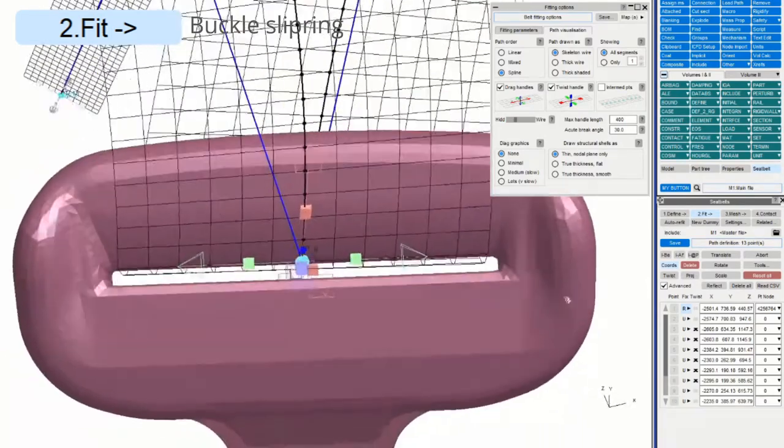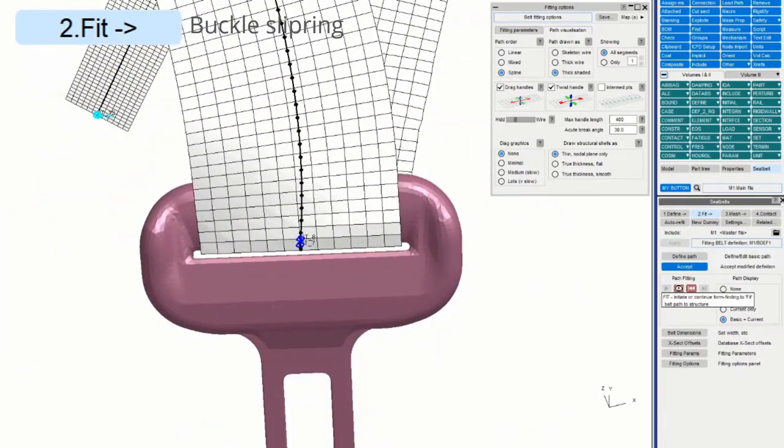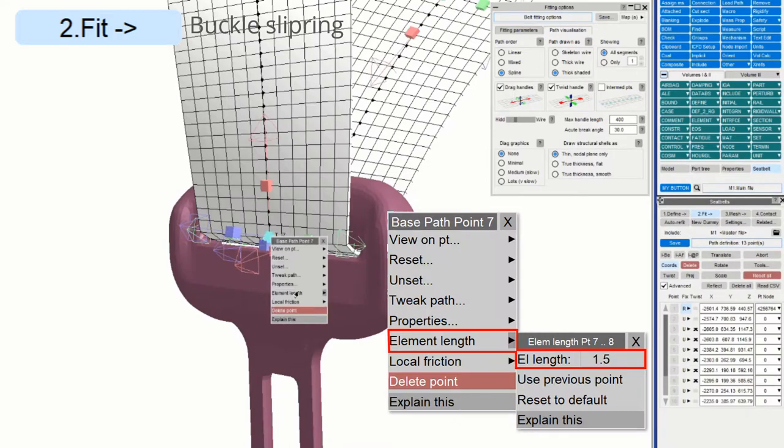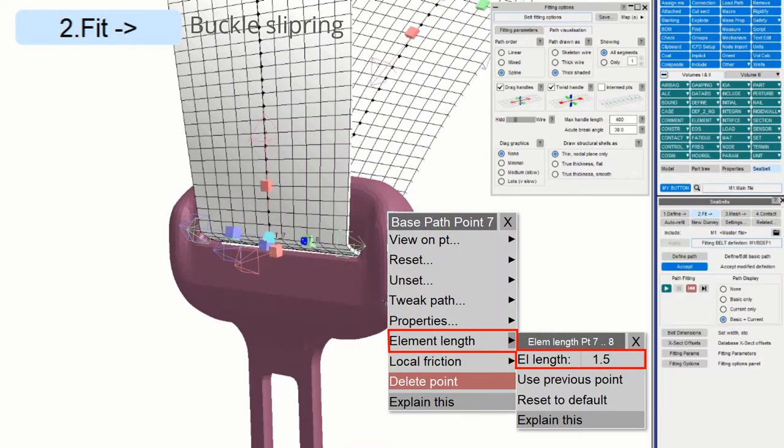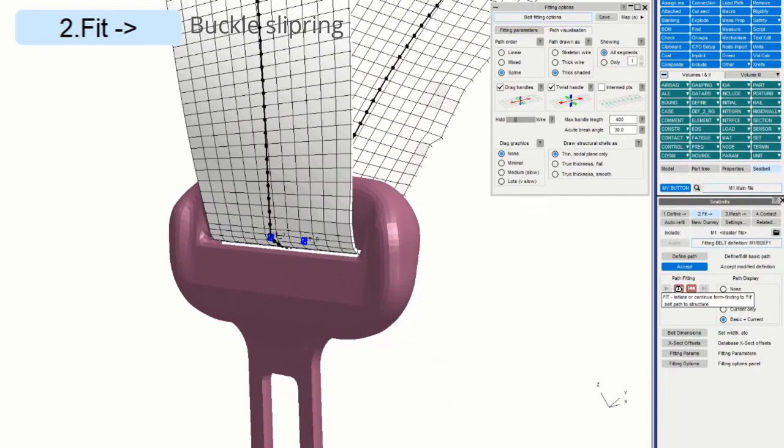This part has a tight radius, so from version 18, we can set the local element length just for this section to be smaller than the rest of the belt.